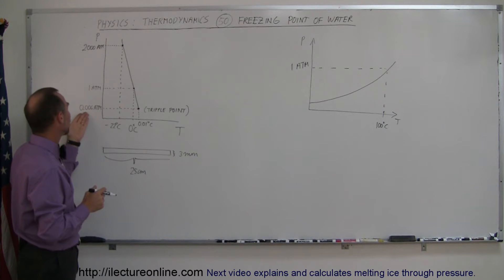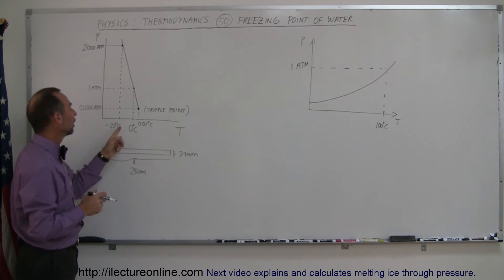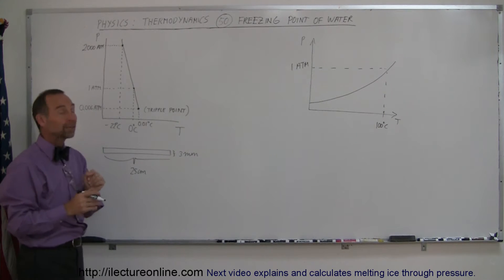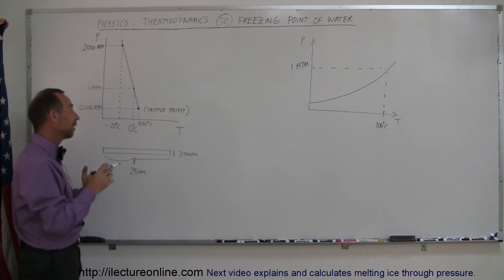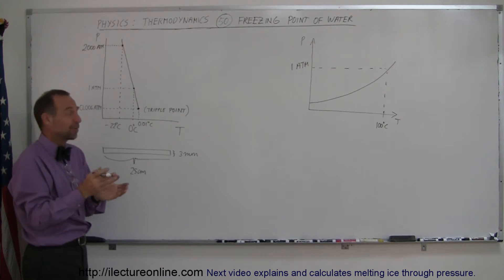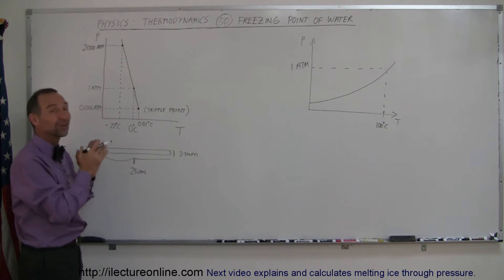Now for example, if the pressure drops to 0.006 atmosphere, the temperature at which water will begin to freeze is 0.01 degrees centigrade. Now you say, well, one hundredth of a degree isn't very much. That's indeed true, but it's there, there is a difference.